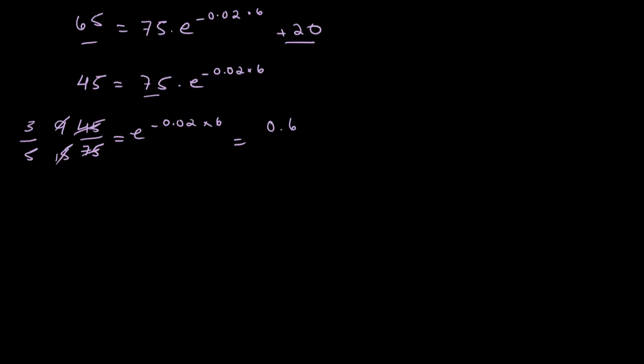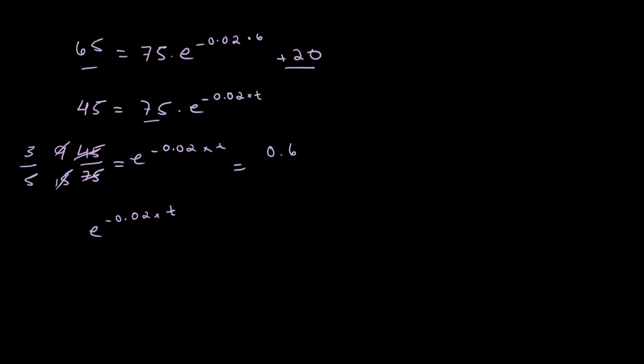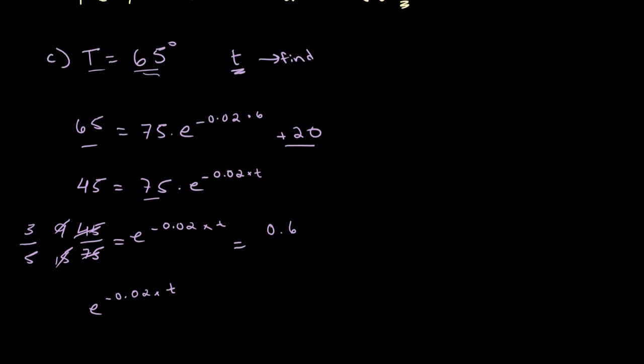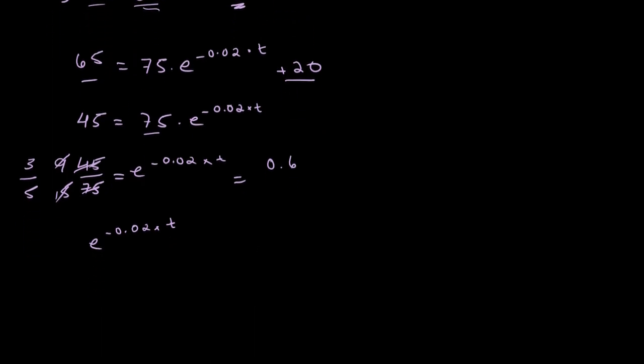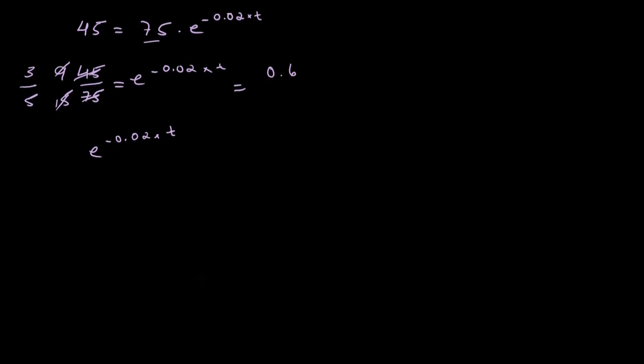So, now what we have is e to the power of negative 0.02 times... I don't know why I wrote 6 over there, it should be T. I apologize. This is T. This should be T. Sorry about that. So, we get e to the power of negative 0.02 times T is equal to 0.6.